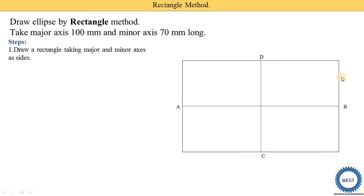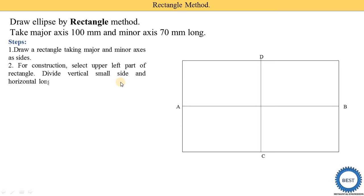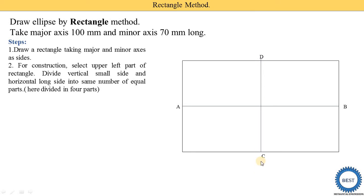Then we draw the rectangle. This side is 100 mm, this is 100 mm, this is 70 mm, and this is 70 mm. For construction, select the upper-left part of the rectangle. Upper means from above A to B — that is the upper side — and left means the left side from C to D. This part we select to start the ellipse.